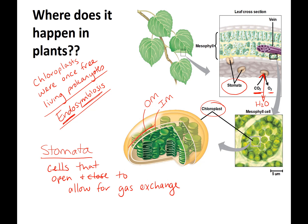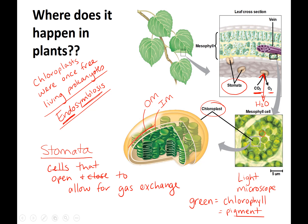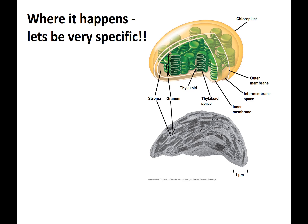Chloroplasts can actually be seen under the light microscope — you can see these green organelles moving around. The green color is due to something called chlorophyll, which is the pigment that actually captures the light. So key terms: chloroplast, stomata, and chlorophyll.